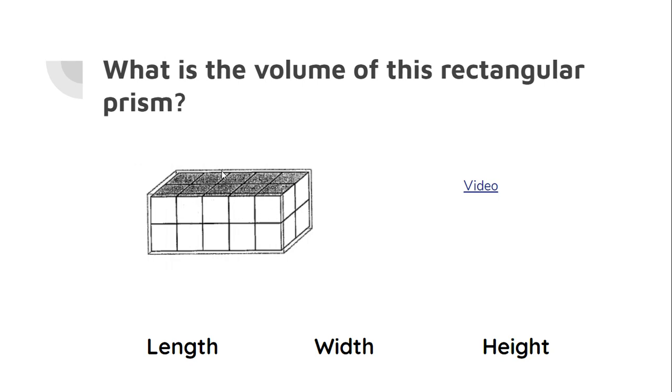Looks like there's 10 unit cubes in this top layer so I bet if there's 10 in the top there's also 10 in the bottom, because we know that each layer in the rectangular prism is going to be the same.